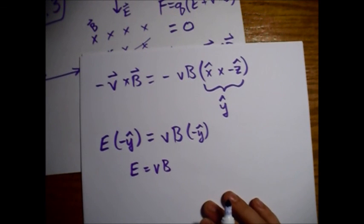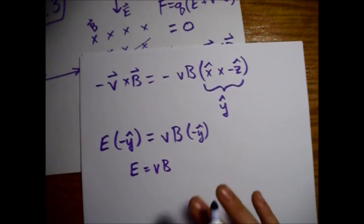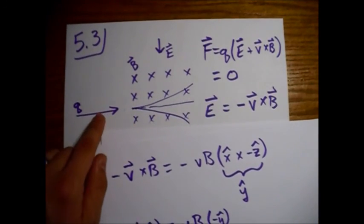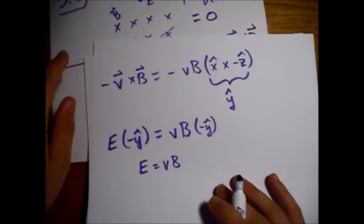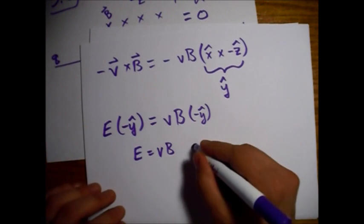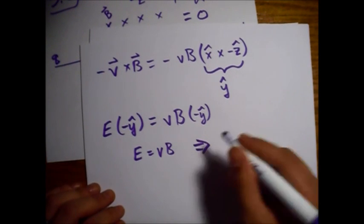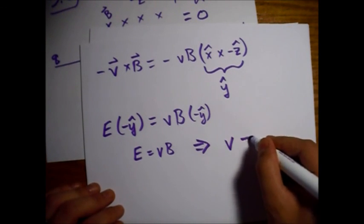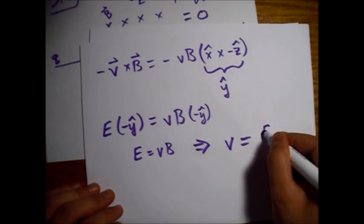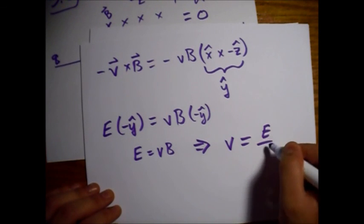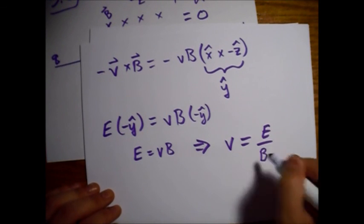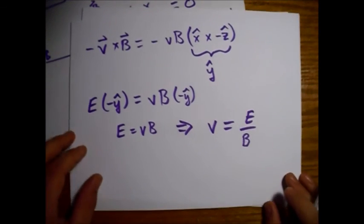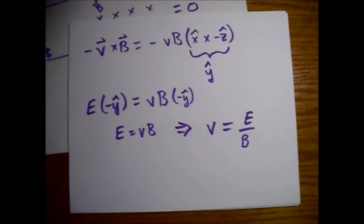We get E equals V times B. Solving for the speed of the particles in the beam in terms of E and B, V is equal to E divided by B. That's the answer to part A.